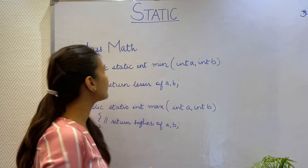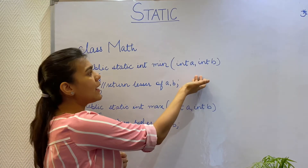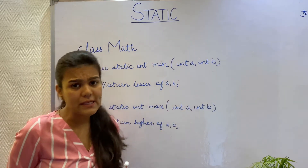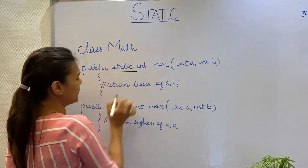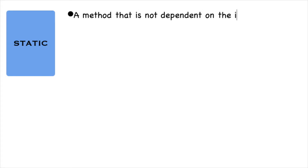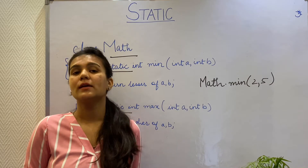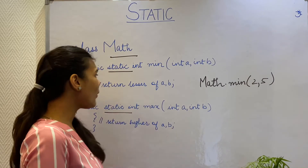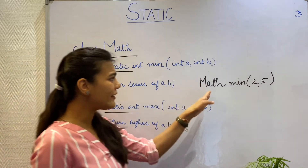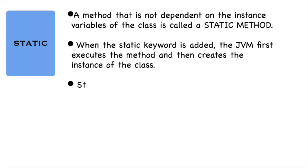For example, I have a math class here where I have the min and the max methods. These methods are taking inputs and then returning the output based on the calculation. Now these methods are certainly not dependent on the instance variables, and you will notice that I have added the static keyword for each of these methods so that they can run without the instance of the class. I'm going to call these methods using the class name — the class name dot the method name, passing the two parameters, and then the method gets called.